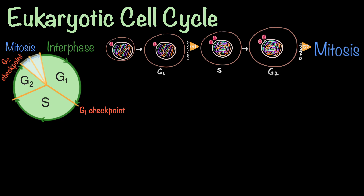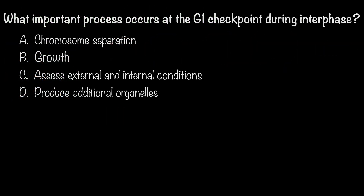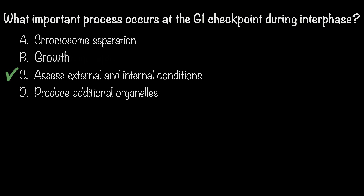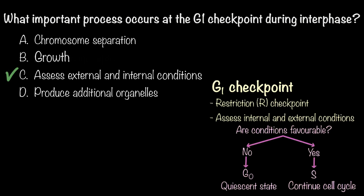Now, time for some questions to test your understanding. What important process occurs at the G1 checkpoint during interphase? The answer is C: assess external and internal conditions. The G1 checkpoint, or restriction point, is a critical phase where the cell assesses its size, external growth signals, and nutrient availability before proceeding to the S phase for DNA replication. If conditions are favorable, the cell continues to the next phase; if not, it may halt and enter the G0 phase. This checkpoint ensures the cell is adequately prepared, preventing errors that could lead to malfunctioning or damaged cells.